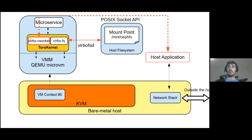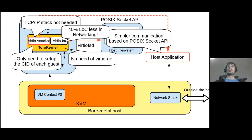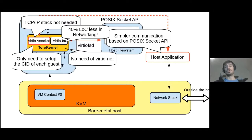In the case of VirtIO vSocket, it allows establishing POSIX socket-based communication between the host and the guest, in which each guest has a context ID to be identified. The use of VirtIO vSocket has several benefits: simple configuration on the guest, no need for a TCP/IP stack, no need for VirtIO network. In case you want to expose the virtual machine to the internet, you need some sort of proxy to forward traffic from the internet to the guest.